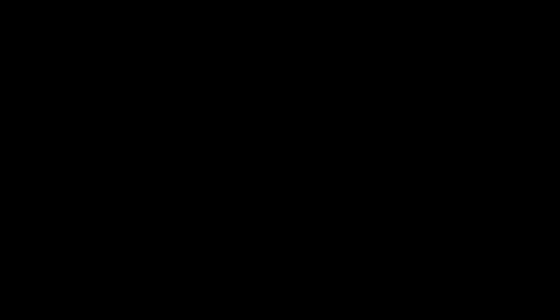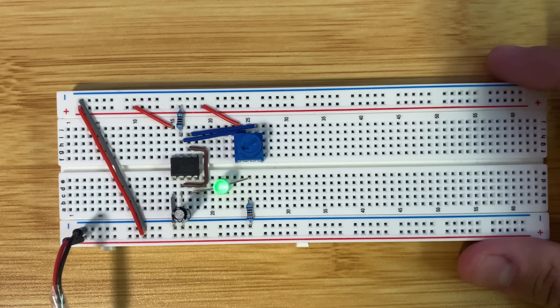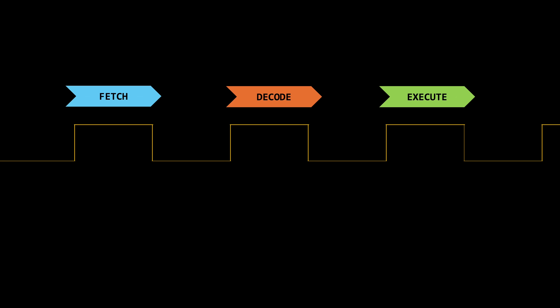Hi friends, my name is George, and this is CoreDumped. This video is not about how to implement clocks, but rather why the oscillating signal they generate is so important to computers. There's a great video from Ben Eder on how to implement a clock like this one. Our goal today is to learn how a clock signal — a series of pulses — prompts the processor to move one step forward.